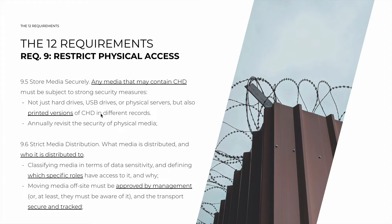If 9.5 was about storage, then 9.6 is about distribution. You need to know what media is distributed and who it's distributed to. If a hard drive leaves a locked room with a lot of card data, you need to know where it went and who it went to. You want to classify media in terms of data sensitivity and define which specific roles have access to those media and why. For example, a USB stick with a small backup differs in sensitivity from a master hard drive with explicit logs including cardholder data from the last ten years — these two should not be handled by the same role.